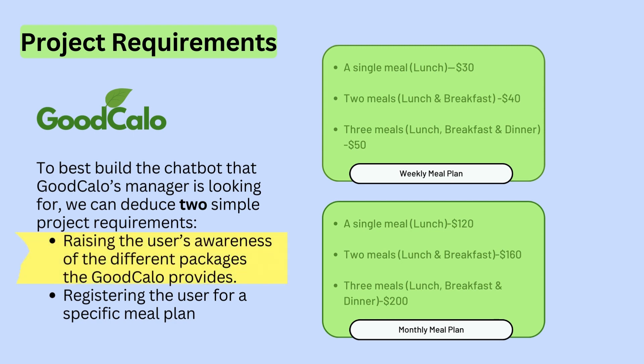Starting with the first project requirement — raising user awareness of the different packages GoodCalo provides — from the manager's point of view, the chatbot must also register users at a later stage for different meal plans. So it would be really helpful if, while satisfying the first requirement and showcasing services, we also collect the user's phone number and full name, so that when they eventually want to register, we can do so with much more ease. To teach the chatbot to recognize names and phone numbers, we will need entities and slots.